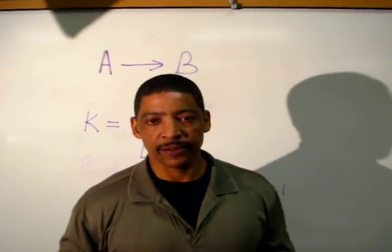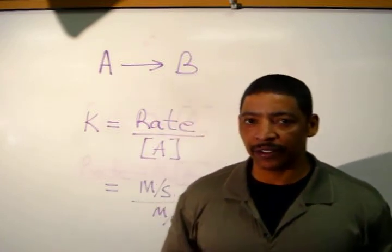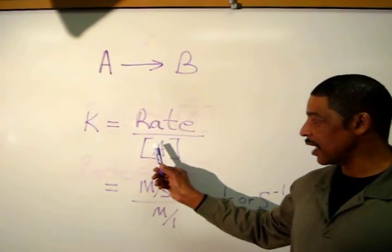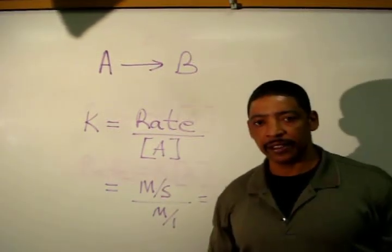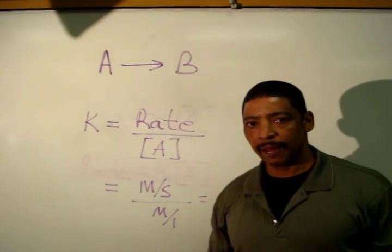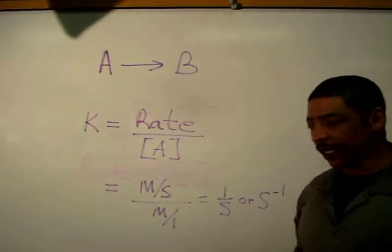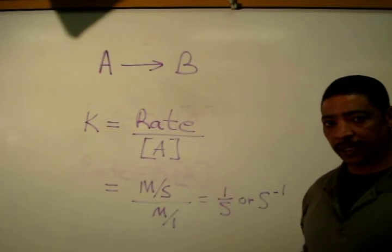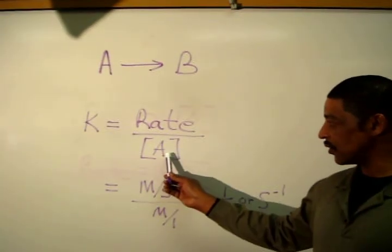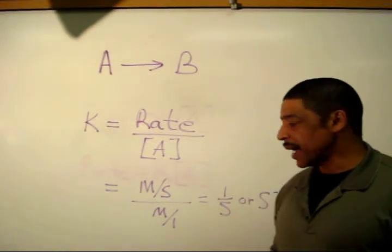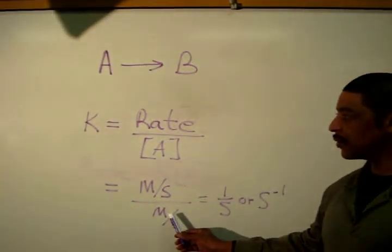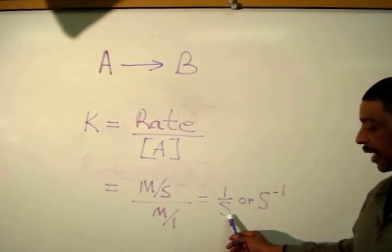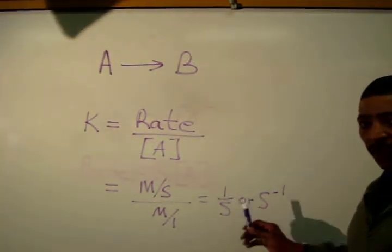In this particular case, the proportionality constant may be calculated as follows, where K is equal to the rate divided by the concentration of reactant A. The units for K will be calculated by simply dividing the units for rate, which are molar per second, by the units for concentration, which are molar. The units for the rate constant in this particular case will be 1 over second, or second to the minus 1.